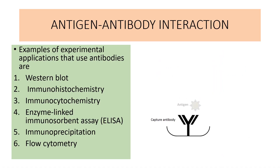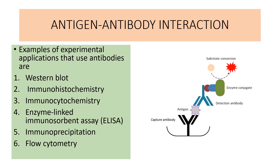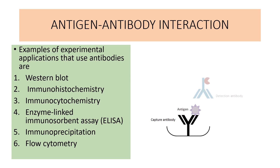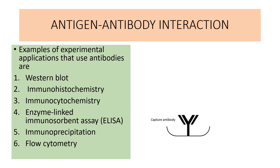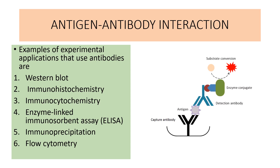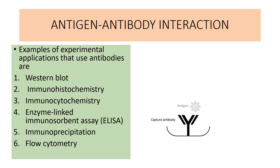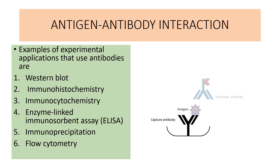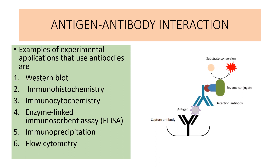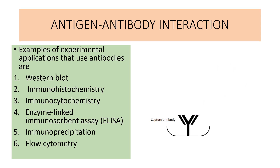Antigen-antibody interactions have a large number of applications, for example: western blot, immunohistochemistry, immunocytochemistry, enzyme-linked immunosorbent assays (ELISA), immunoprecipitation, and flow cytometry. In these various tests we use antigen-antibody interaction. In ELISA, we have a well where the antibody is present and we allow the antigen to bind with it. We then add a detection antibody combined with a detection enzymatic conjugate, and then we add a substrate. If the substrate's color changes, it means the reaction is positive; otherwise the reaction is negative. In this way we determine, with the help of antigen-antibody interaction, whether a particular type of antigen is present in the body or not.